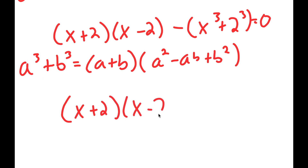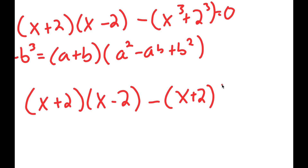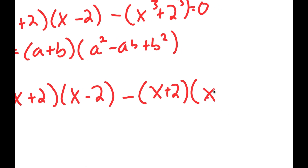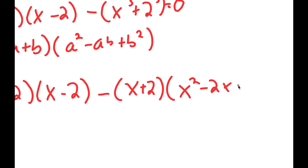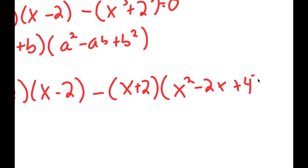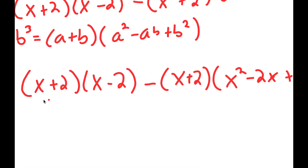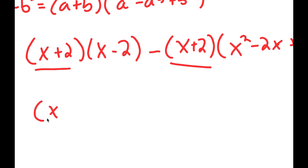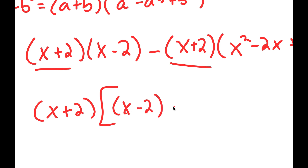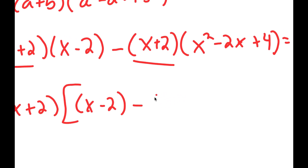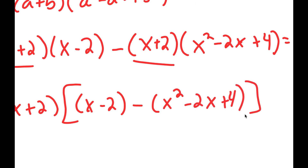So now I get x plus 2 times x minus 2, minus x plus 2 times x squared minus 2x plus 4, is equal to zero. Notice how both terms have x plus 2 in them, so if I factor out x plus 2, I get x plus 2 times the quantity x minus 2 minus x squared minus 2x plus 4, equal to zero.